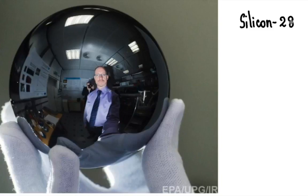Silicon-28 is one of the isotopes of silicon. And this sphere has exactly 2.15 times 10 raised to 25 atoms.